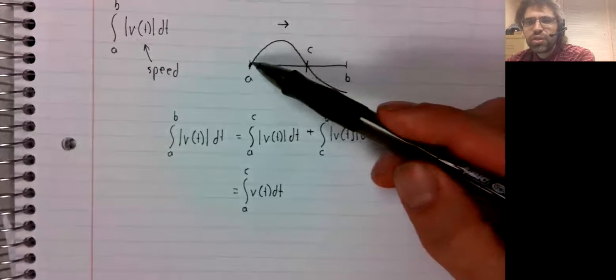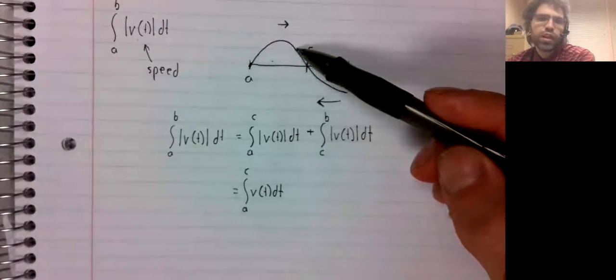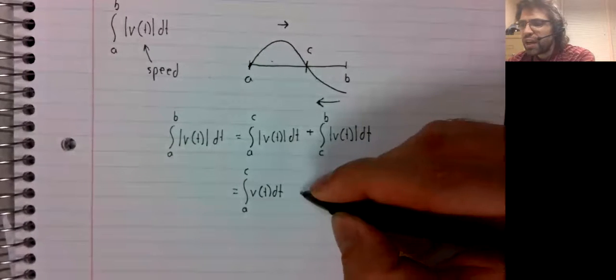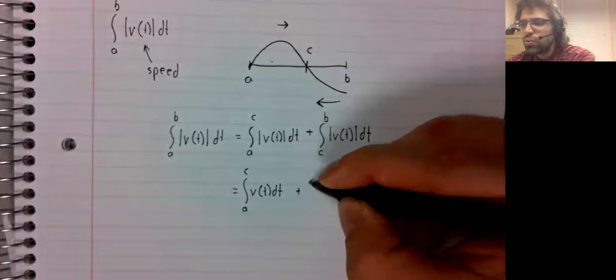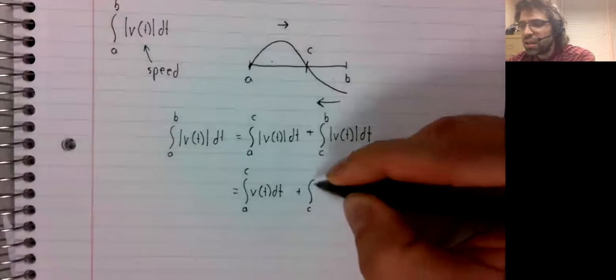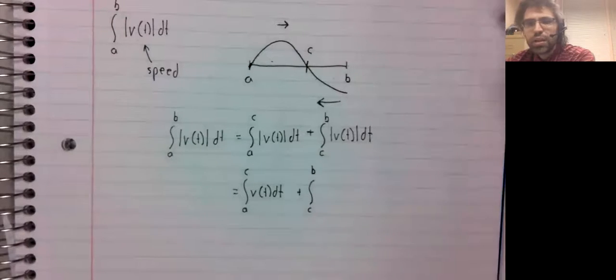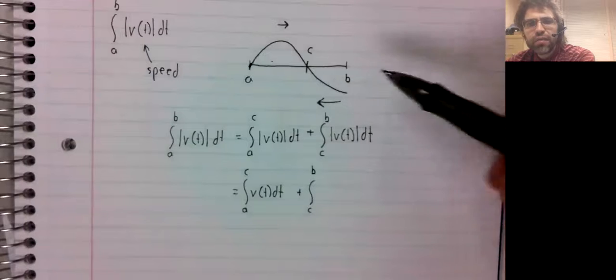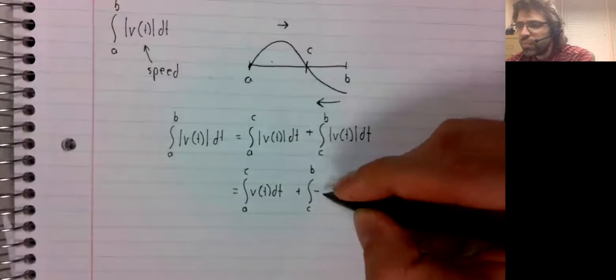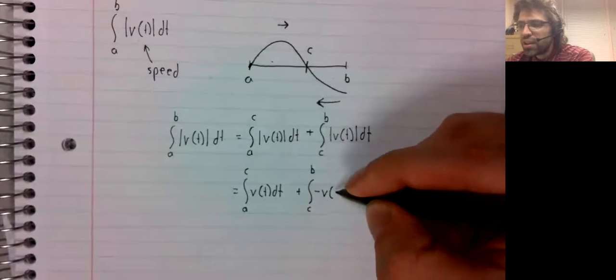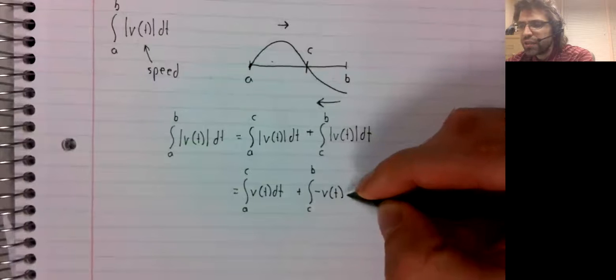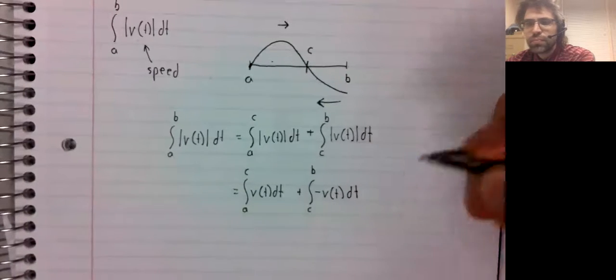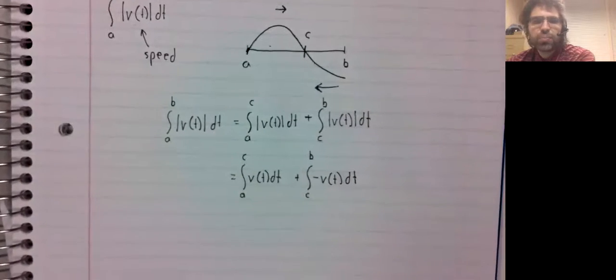As I've mentioned, since the velocity is already positive here, the absolute value doesn't do anything. The absolute value of a negative quantity puts a negative sign in front of it, and that will make it positive.